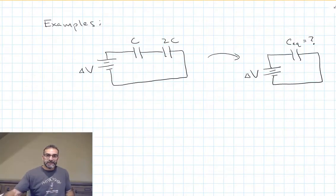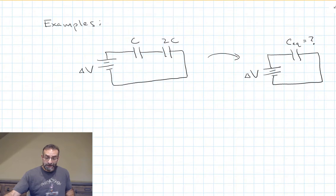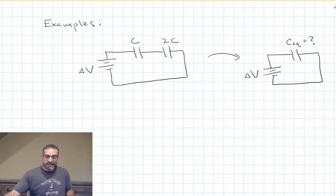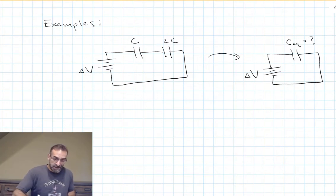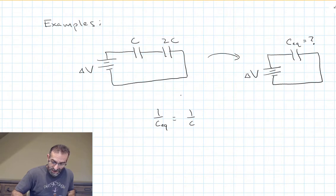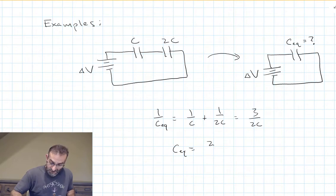Let's say I want to make a circuit with two capacitors hooked up in series — one is twice as big as the other. But I look in my drawer and can't find capacitors with those values, though I have lots of capacitors to choose from. What equivalent capacitor can I use with the same battery that will store the same amount of charge as these two capacitors in series? Since we're dealing with a series circuit, we use our series formula: 1 over C_equivalent equals 1 over C plus 1 over 2C, and I end up with 2/3 C.